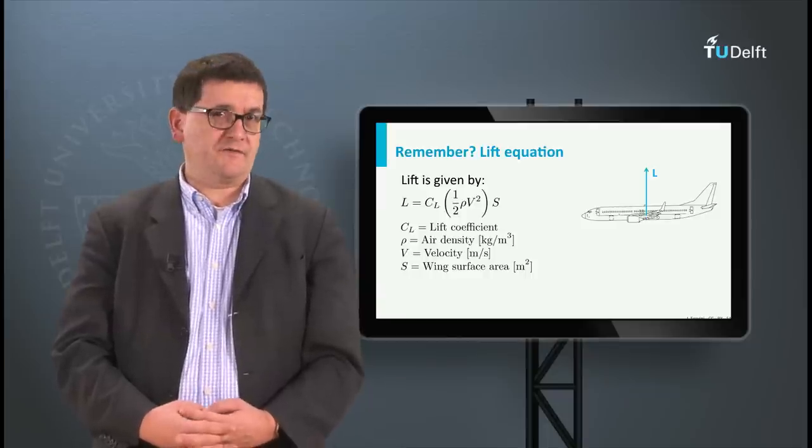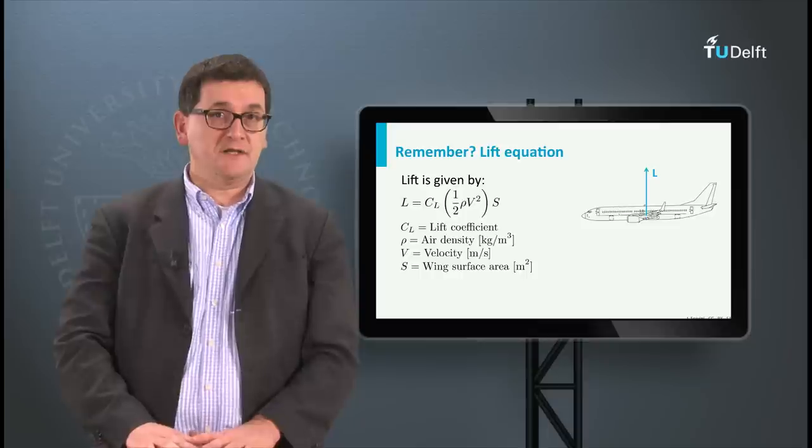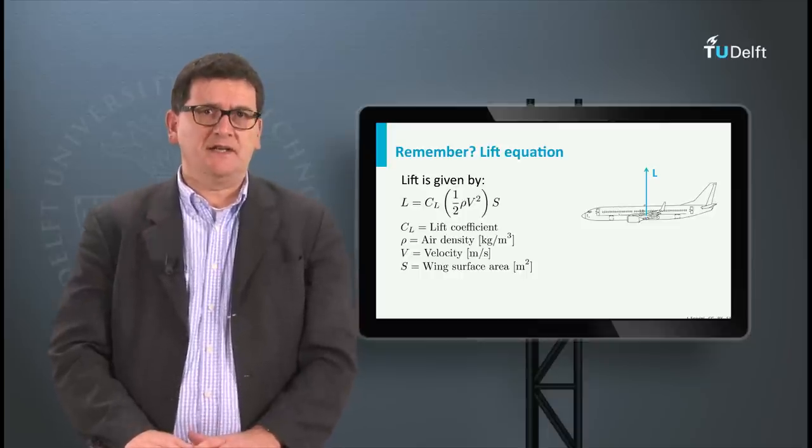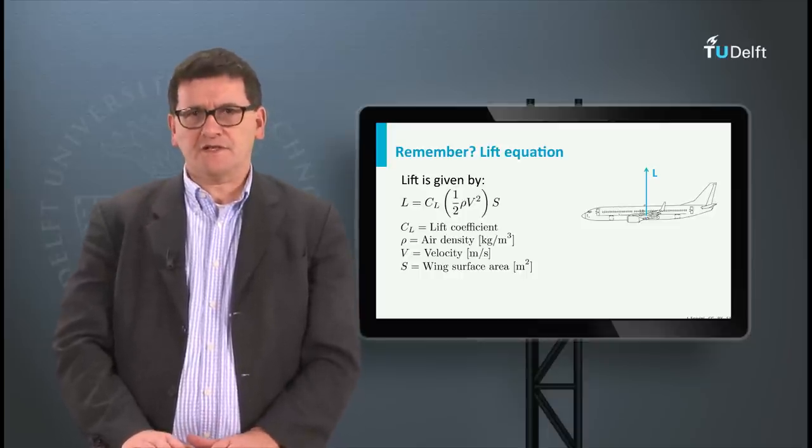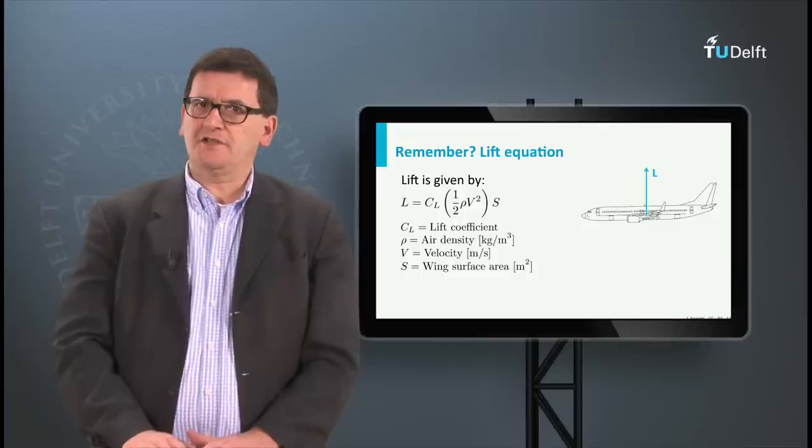These parameters are the lift coefficient, the air density, the airspeed, and the wing surface area. We also have seen that the lift coefficient is dimensionless.